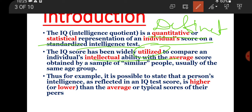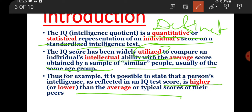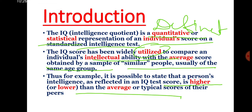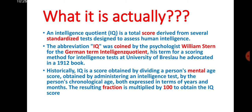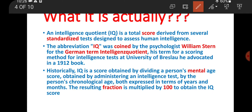We compare with the average score. What is the average score? We get the average score by taking a sample of similar people, usually of the same age group. For example, if we want to know a 6-year-old child's intelligence, we get the average score from other 6-year-old children's tests using a standardized test.